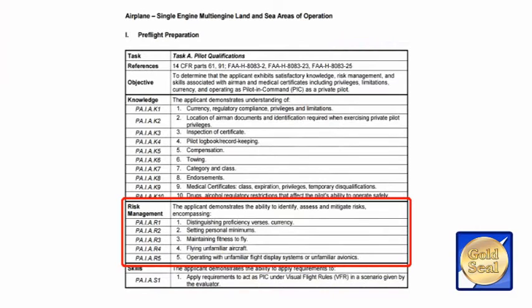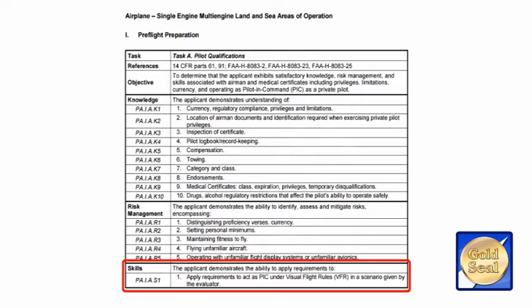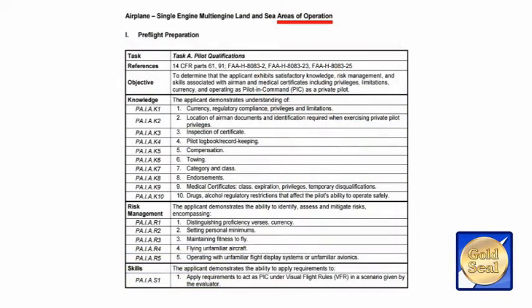The next portion would be risk management. The way you should look at risk management is: what would be some of the problems that would arise out of me not knowing this information or not being able to do this particular task? Then we have our skills section at the very end. The skills section is what the examiner ultimately wants to see out of you. As an examiner, I would ask you: what do you have to have in your personal possession in order to act as a private pilot or commercial pilot? That would ensure to me that you know what it takes to act as pilot in command. So in essence, when you go for your practical exam, if you have the knowledge, the risk management skills, and the skills to perform the task, it should be a relatively easy experience for you.